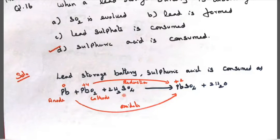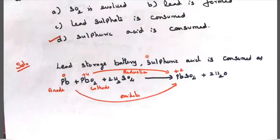Lead plus lead oxide plus sulphuric acid gives lead sulphate plus 2H2O. Here lead is 0 and lead PbO2 plus 4 valence and PbSO4 is plus 2 valence. It's a disproportionation reaction. Lead reduces from plus 4 to plus 2 and 0 oxidizes to plus 2. Everything is consumed by sulphuric acid. So sulphuric acid is consumed.